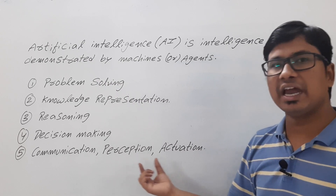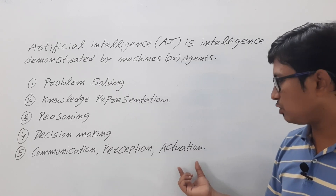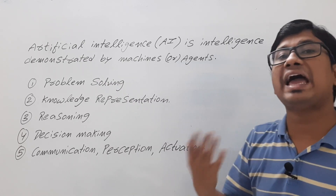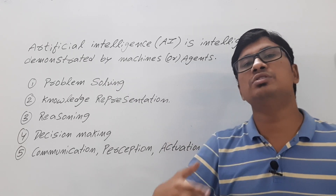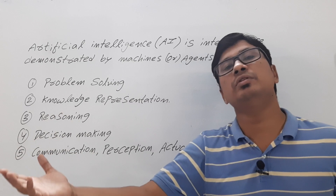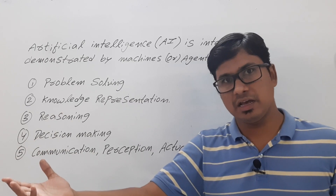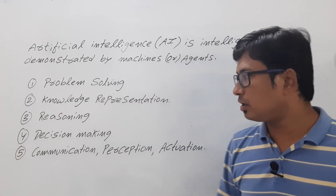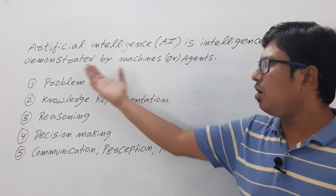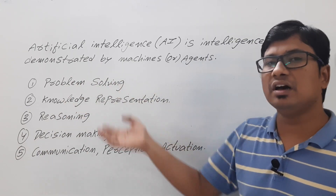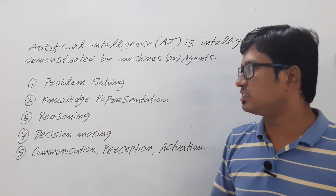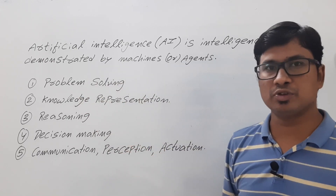Perception falls under computer vision. And for actuation, robots sometimes need to physically perform actions. So all of these — natural language processing, computer vision, and actuation — are tasks involved in artificial intelligence.